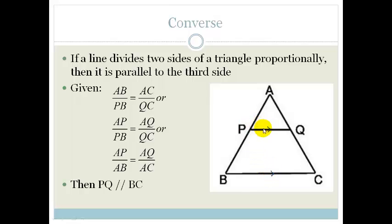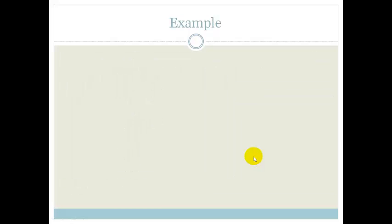So our original theorem said that if these are parallel, then these would be divided proportionately. The converse says that if these are divided proportionately, then this is parallel. Let's look at the example.